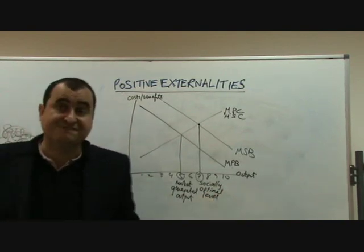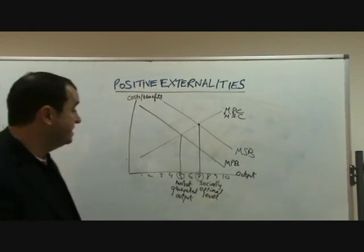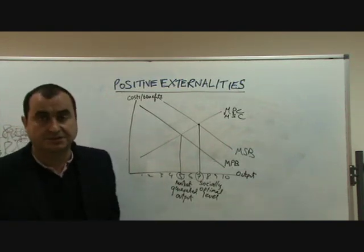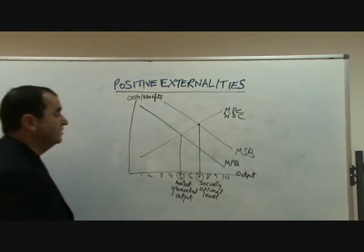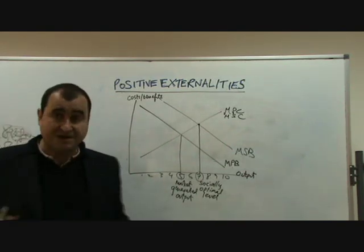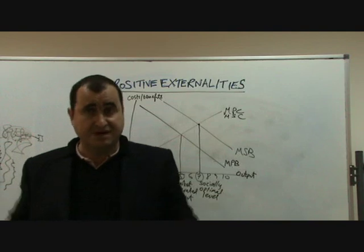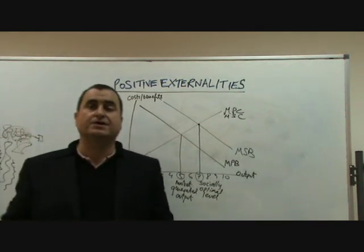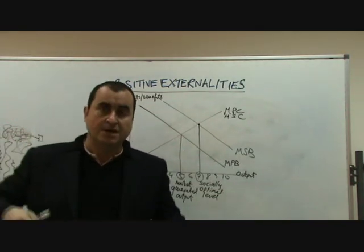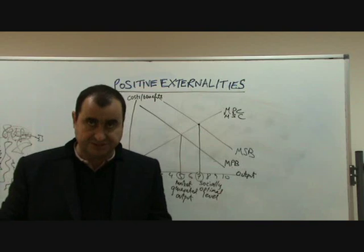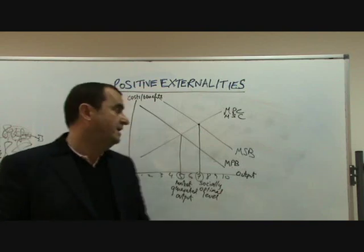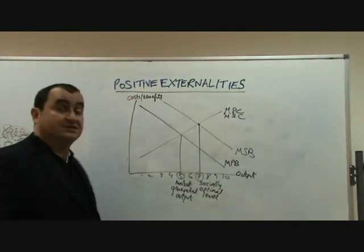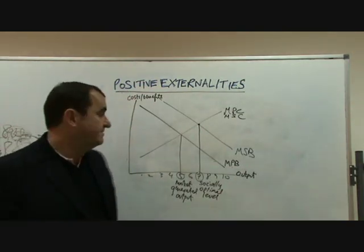The market has failed because the market under-provides this good. The market only goes up to where private costs and benefits intersect, because private citizens and private firms only consider their private costs and benefits when deciding how much to produce or buy. They don't consider the external benefits.